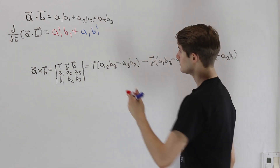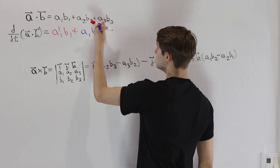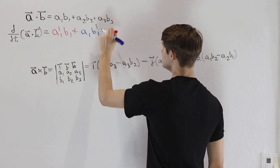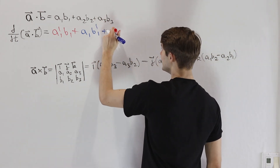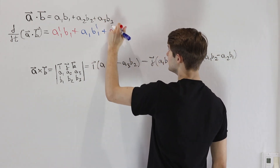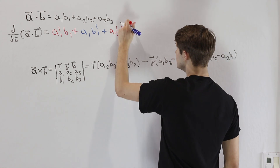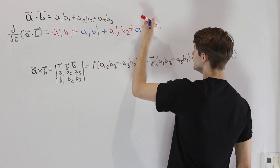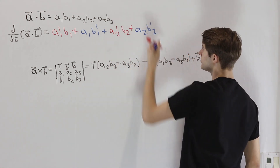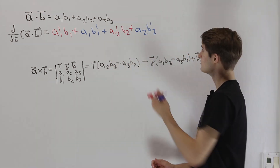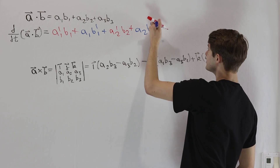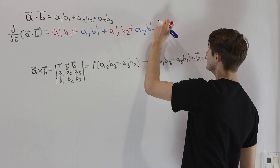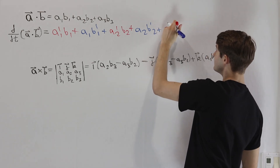If we do that again for the next part, A2B2, we're going to get A2' B2 plus A2 B2'. And finally, we can do the same thing for the third component.